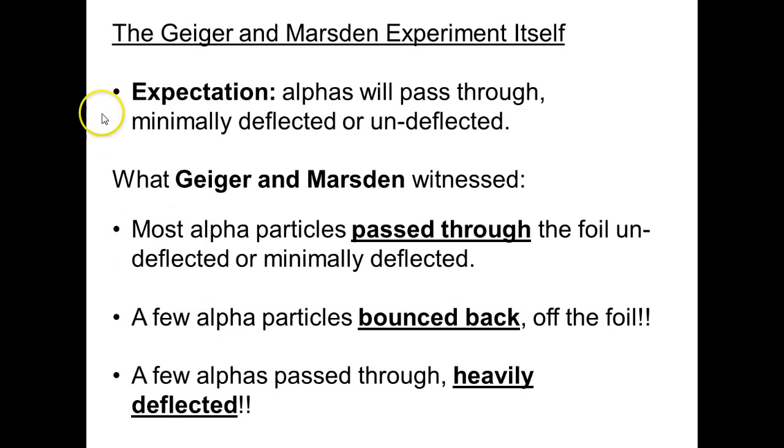So this is what we can conclude, and this is how we summarize the experiment itself. We expect alphas to pass through minimally or undeflected. We witnessed most doing what the expectation was, but some bounced back off the foil with 180-degree deflection angle, and a few passed through but they were heavily deflected.